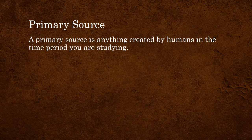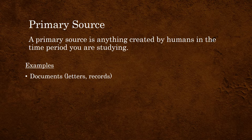A primary source is anything, anything at all, which was created by humans in the time period you are studying. So it's something from the past — some object, document, or something created by a human being in a past time period. For example, a written document could be a primary source if it was created in the time period you're interested in. Imagine you were interested in the 1800s — anything written down by a human being during the 1800s would be a primary source for that time period.